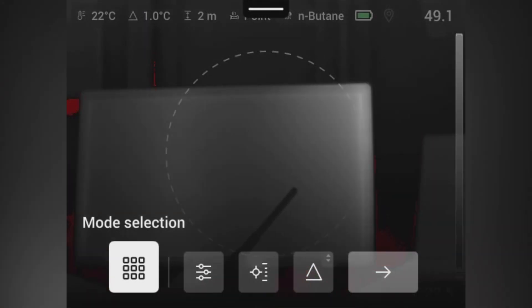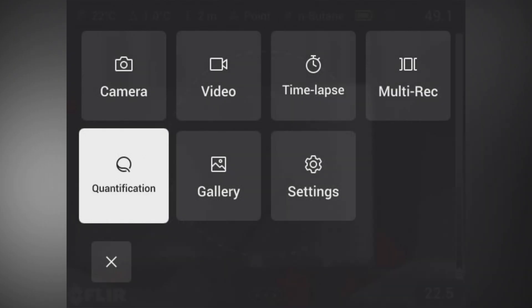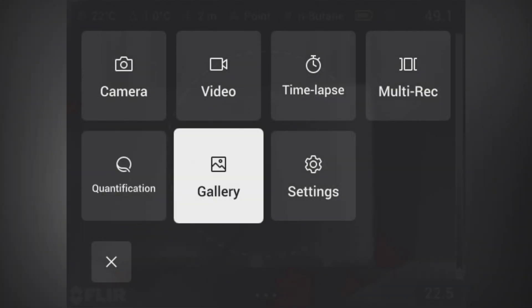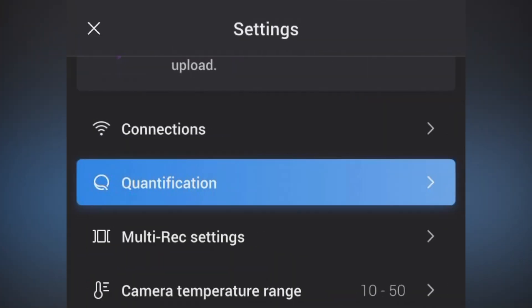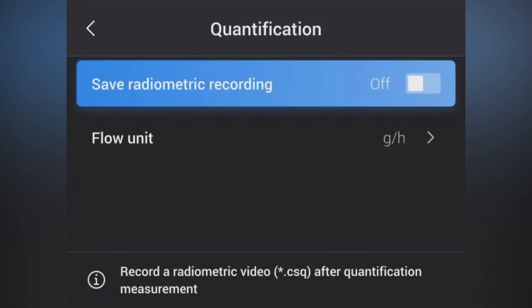To do this, you go into mode selection and set up the camera through the settings to tell it to record an additional video that allows you to post-process a quantification run. Go into quantification and click save radiometric recording from off to on.